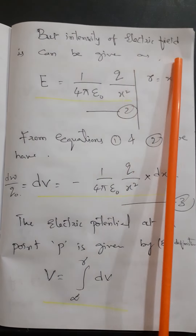Now the total electric potential at point P is given by the definition — bringing a unit positive charge from infinity to that point — so we integrate dV from infinity to R. This gives V equals integral from infinity to R of minus 1 by 4 pi epsilon-naught times Q by X squared, into dx. Taking out the constants, integration of 1 by X squared gives minus 1 by X. Substituting the limits, it becomes 1 by R minus 1 by infinity. Since 1 by infinity is zero, we get the final result.